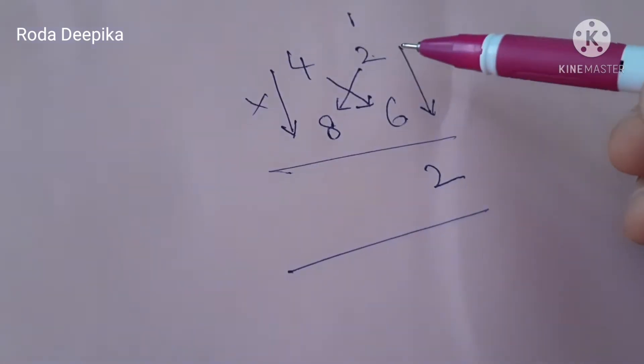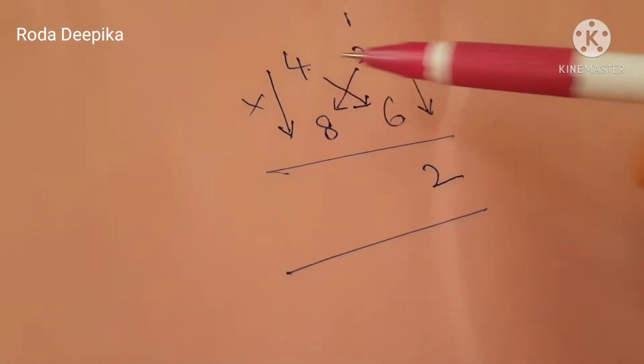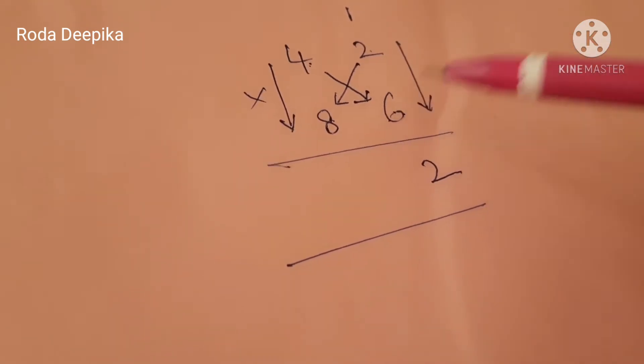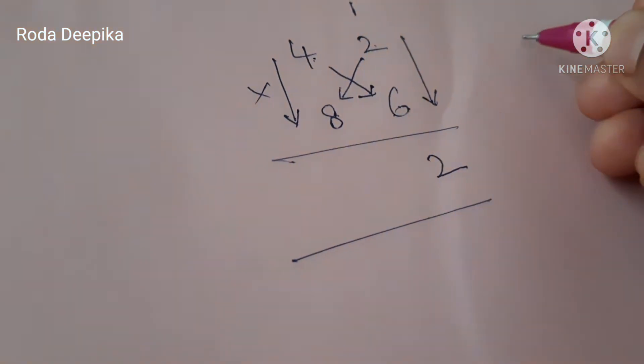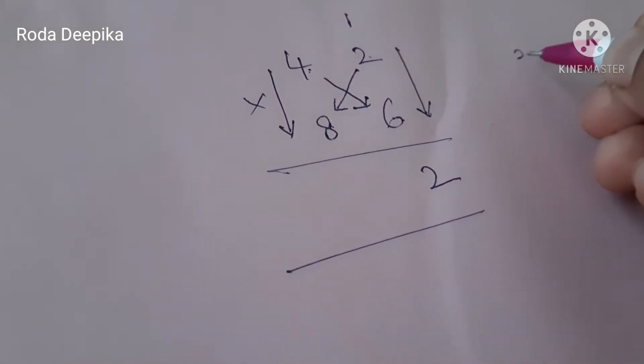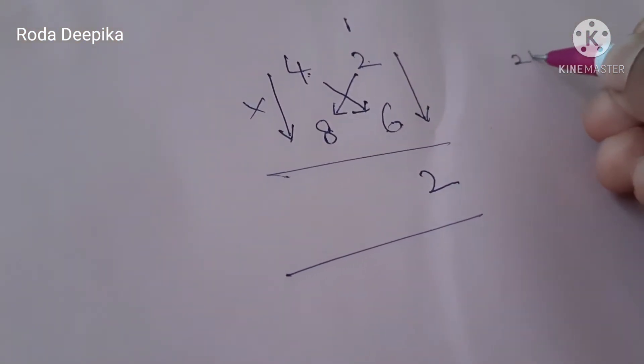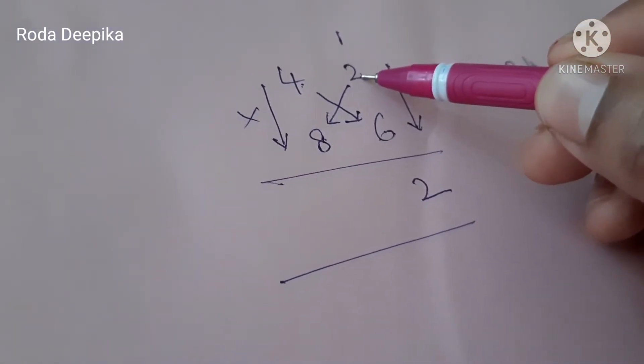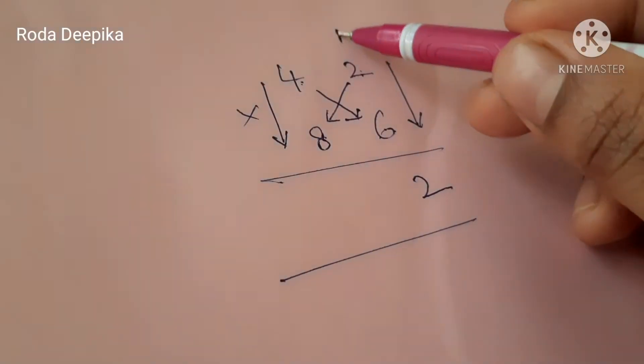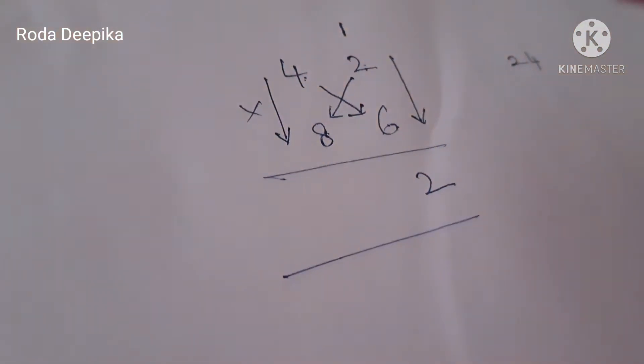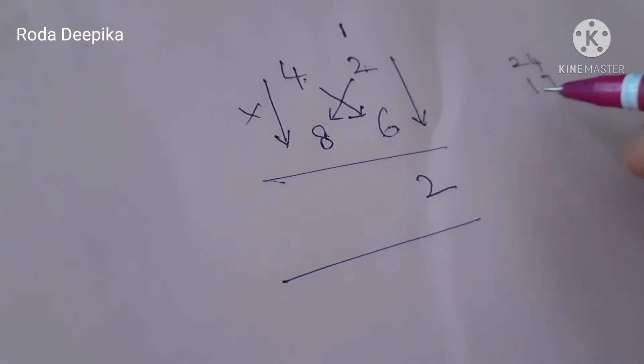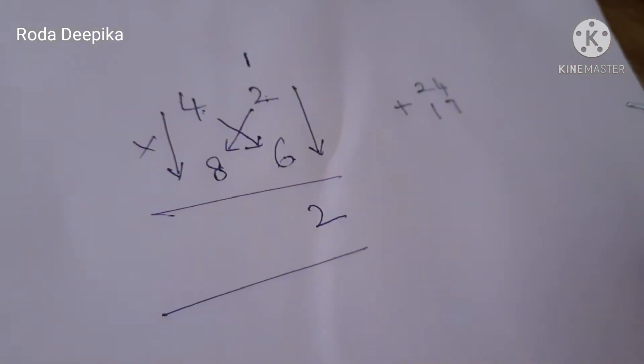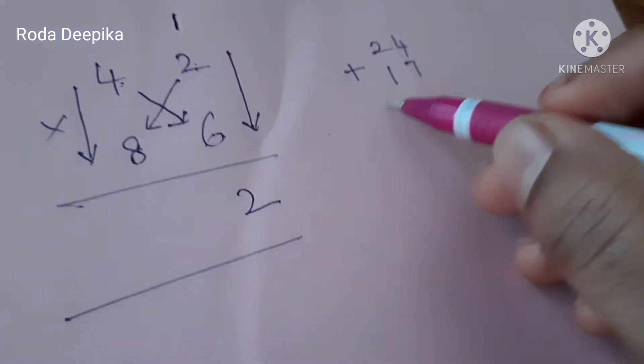And second step is to cross multiply the 2 numbers and add. 4, 6 are 24. Let me put 24 aside. 8, 2 are 16 plus add the carry 1. So we get 17. Now we have to add these 2 numbers. 24 plus 17. We get 41.